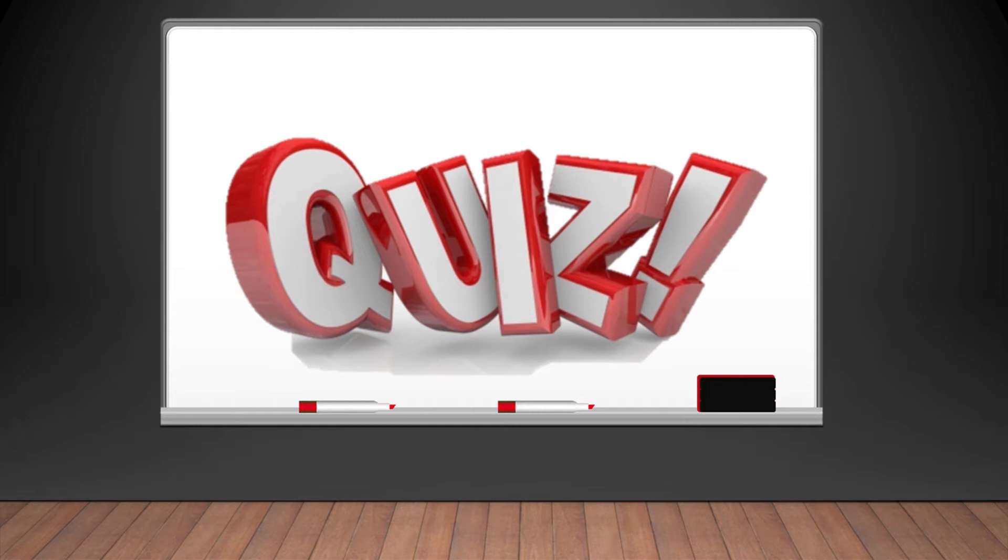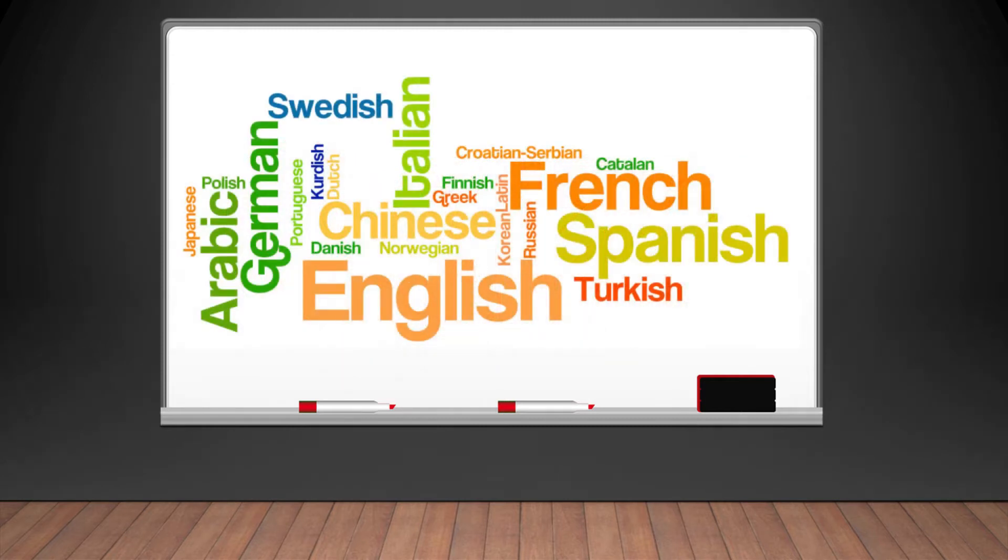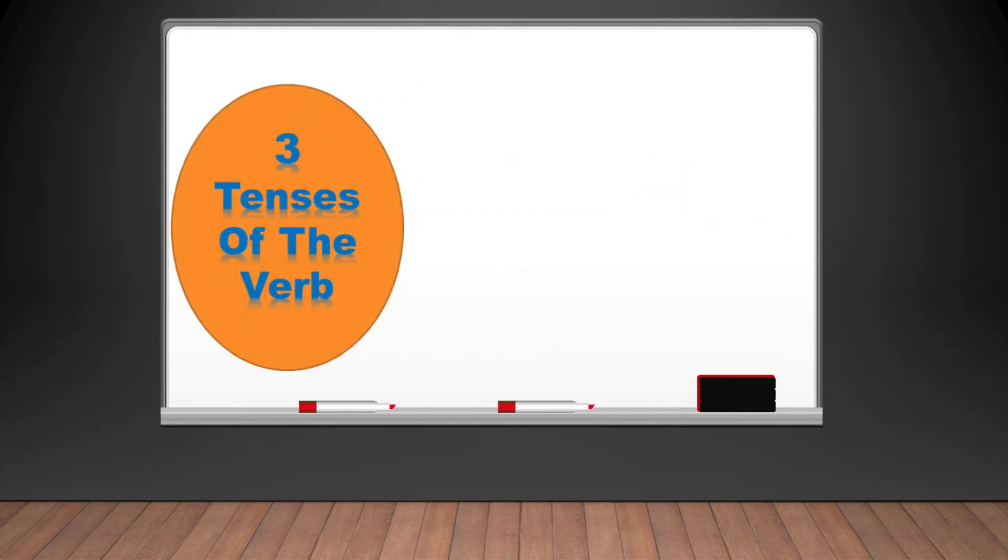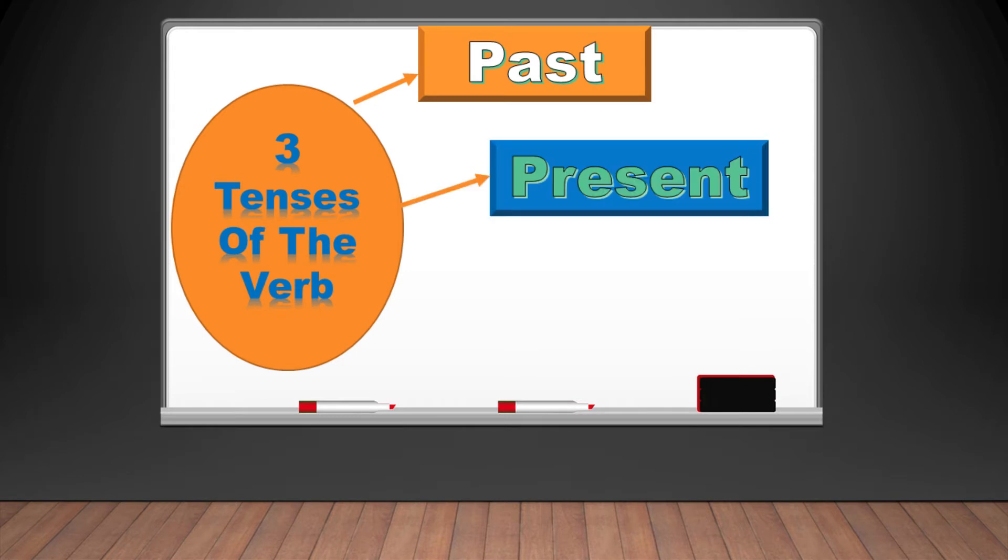When we talk using any language we know, we should make sure that the three tenses of the verb are used correctly. The same in talking in English. There are three basic tenses of the verbs: the past tense, the present tense, and the future tense. Only the present tense of the verb is going to be discussed in this video. Other verb tenses will be discussed in separate videos.